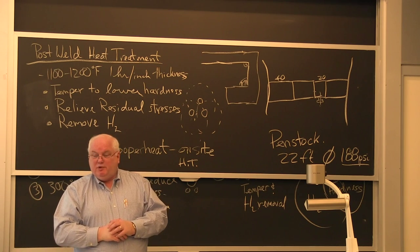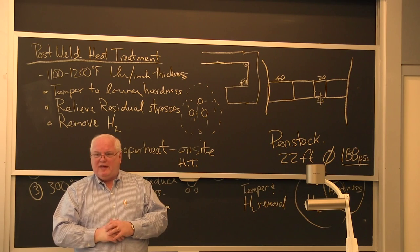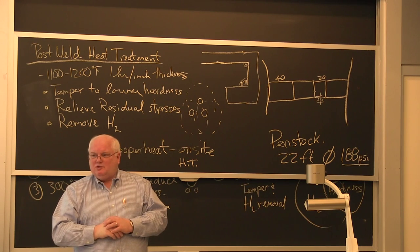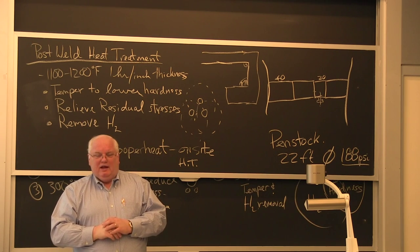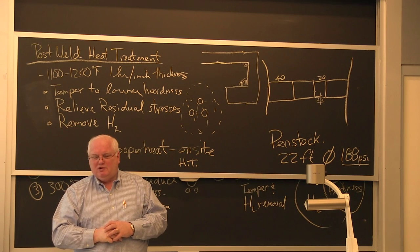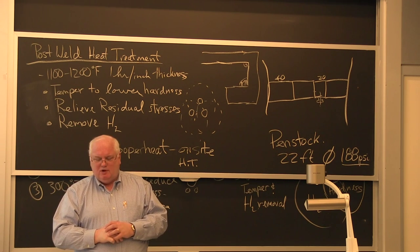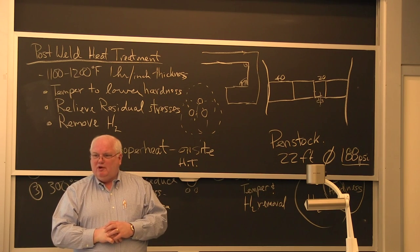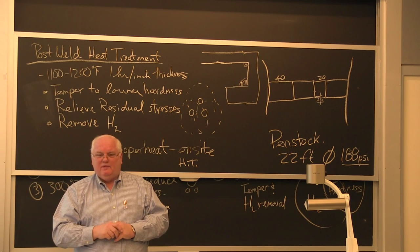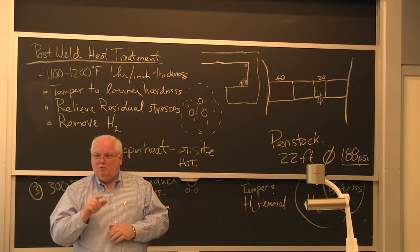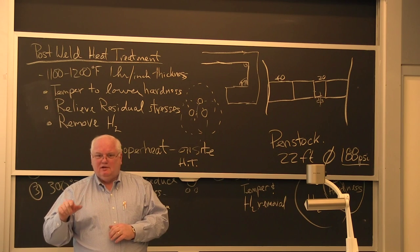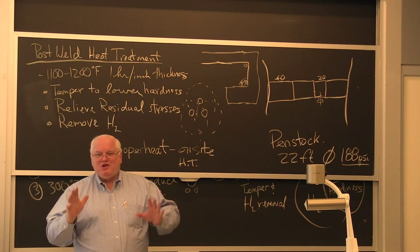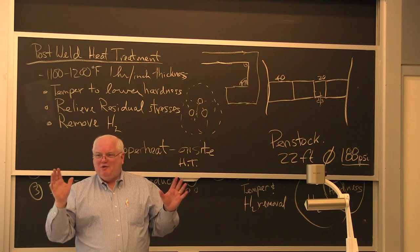Steinmetz sends a bill to General Electric for $1,000. Now in 1900 or 1910 whatever this was, $1,000 was a lot of money. The chairman of General Motors supposedly writes back to Steinmetz and says, we thank you for fixing the problem but how can you justify a $1,000 bill? And Steinmetz writes back: chalk $1, knowing where to put the X, $999.